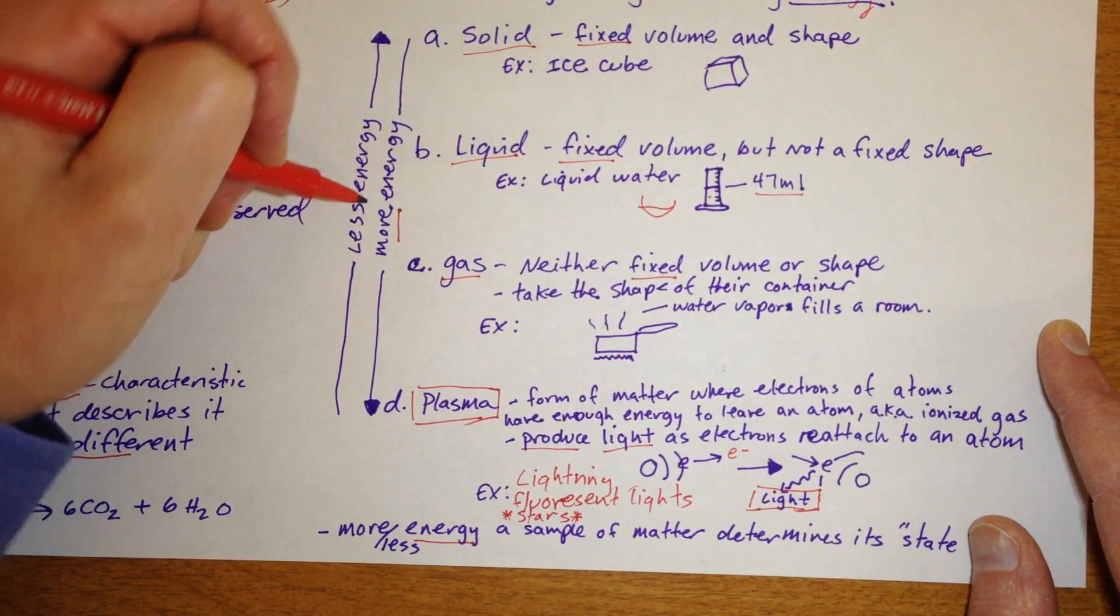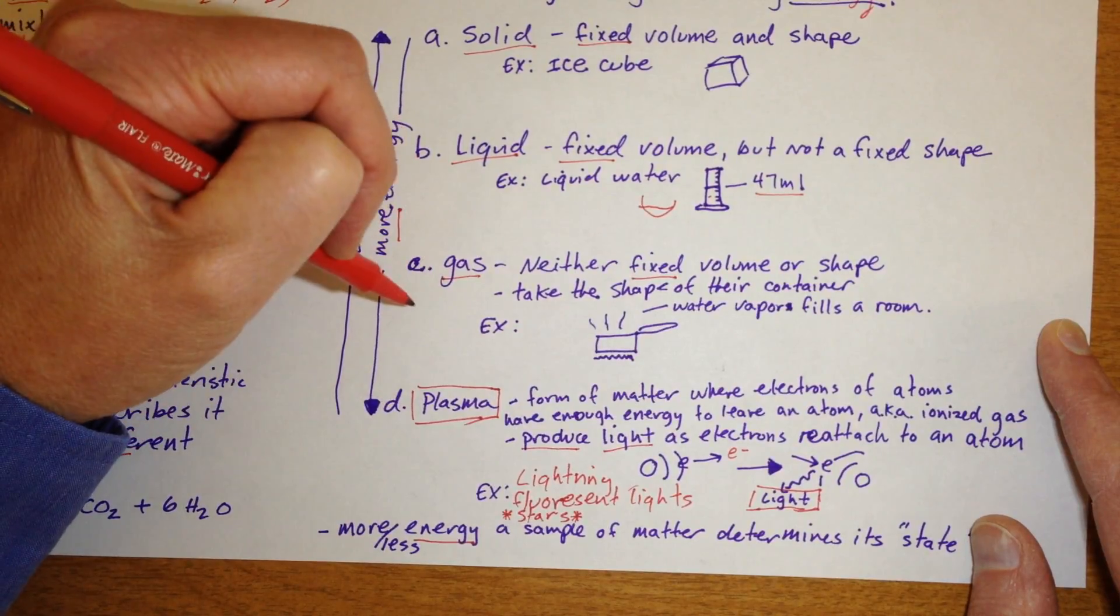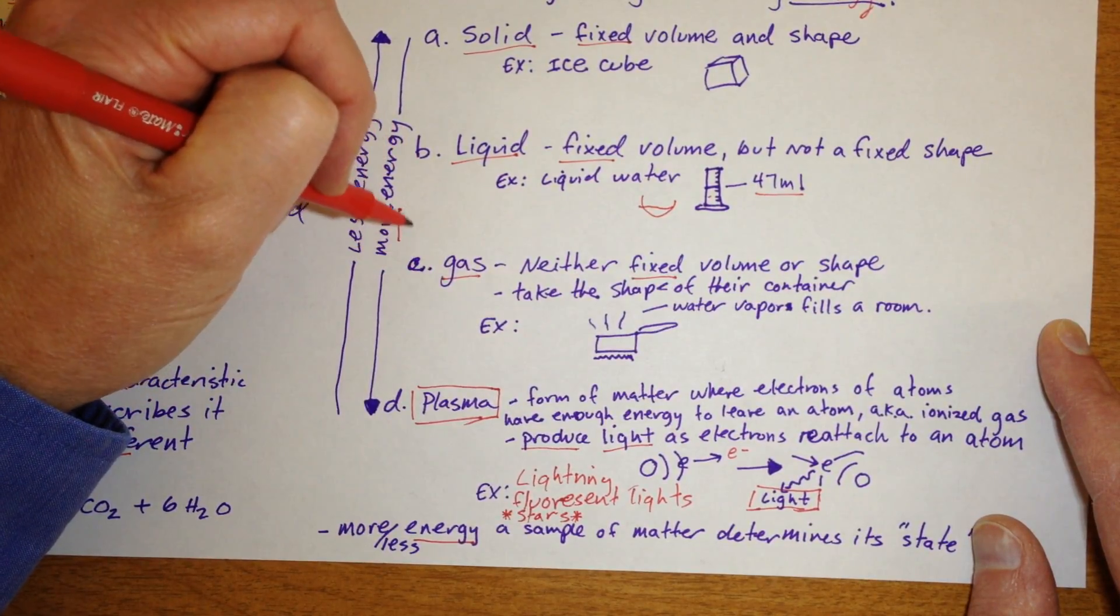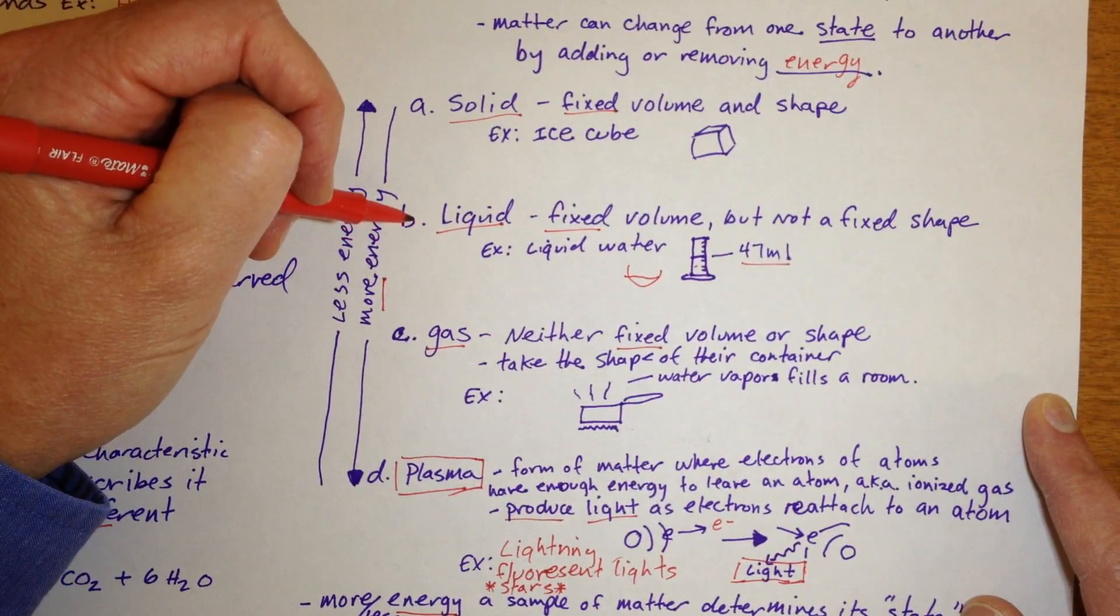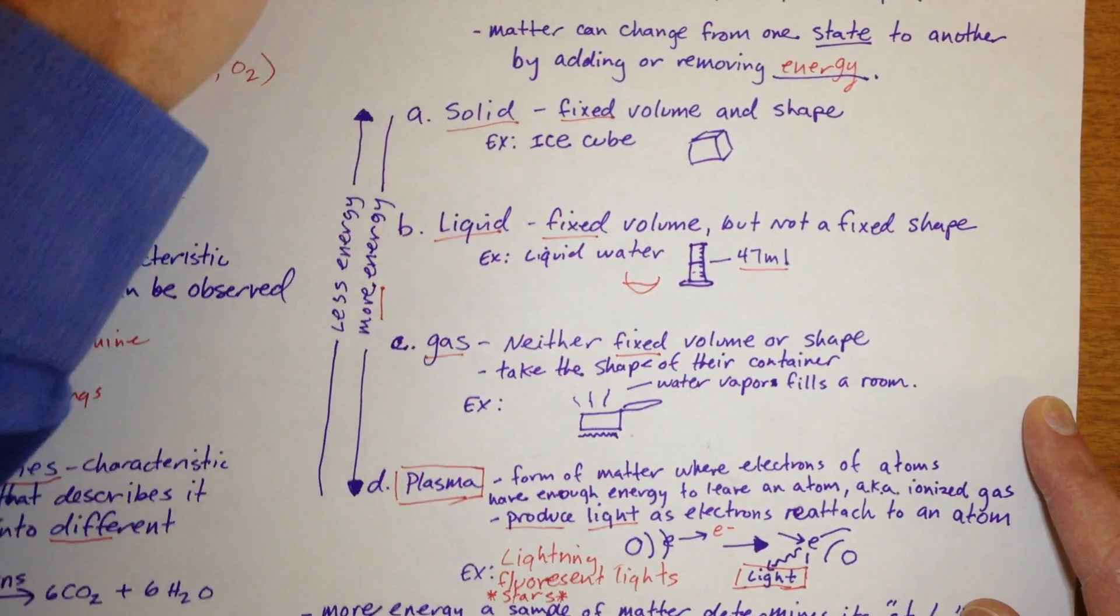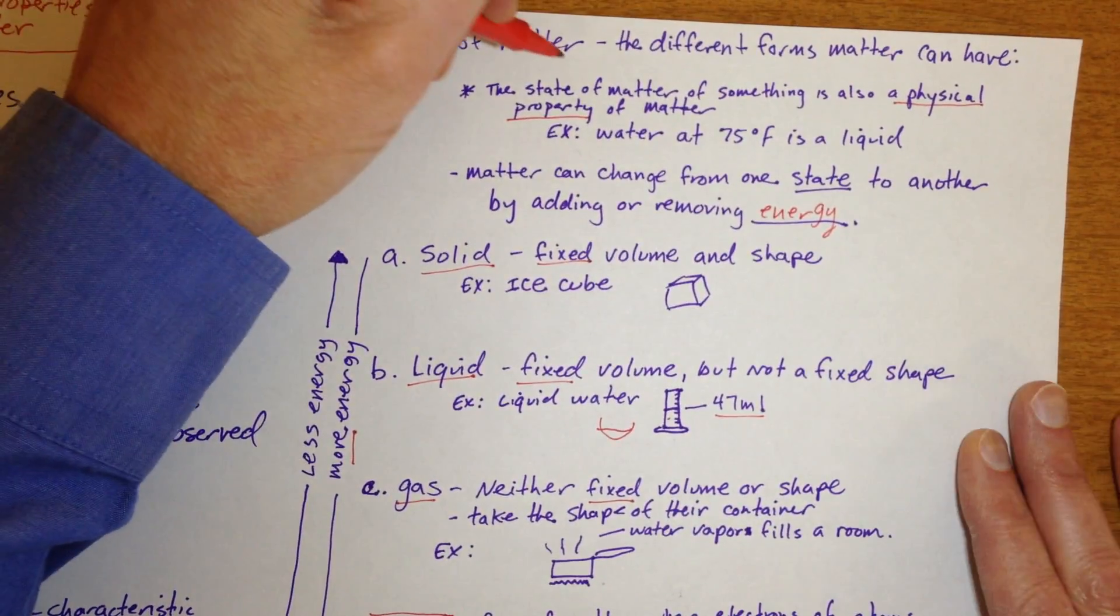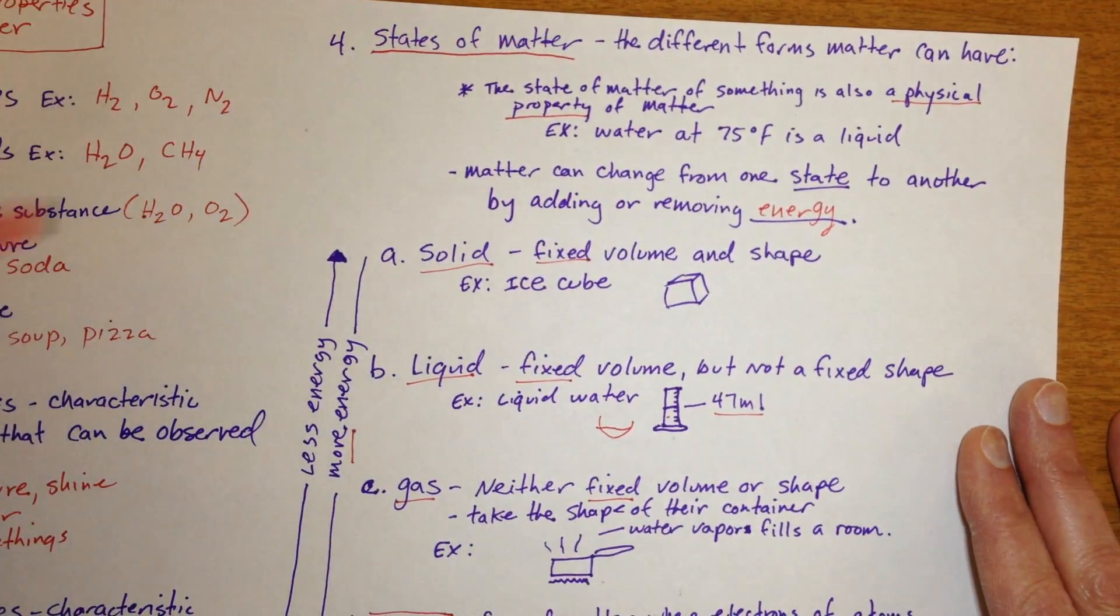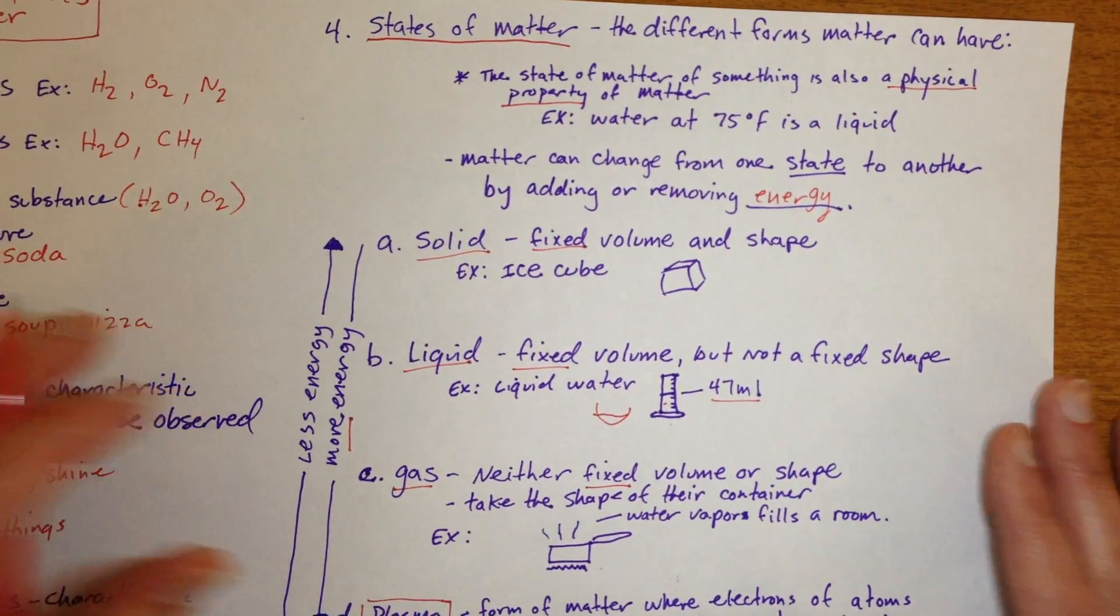If things start cooling down, the plasma has the electrons jump back down and gas will cool down to a liquid. And a liquid with less energy can cool down to a solid. So these are the changes known as the state of matter, which is a physical property of matter. And that's it.